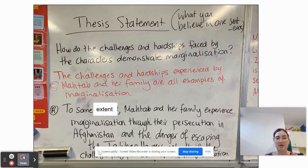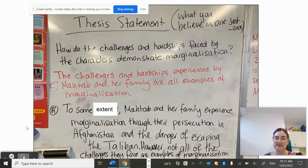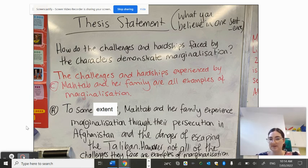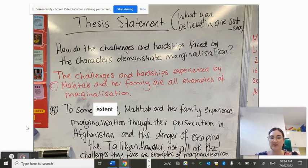If we look at the A-level example, I've given more specific detail and written what's called a contention rather than a thesis. A thesis is a very basic statement, whereas a contention includes more detailed information about what you believe — it's a more advanced version. For example: 'To some extent, Matab and her family experienced marginalization through their persecution in Afghanistan and the danger of escaping the Taliban; however, not all of the challenges they face are examples of marginalization.' I would expect your essay to discuss persecution in Afghanistan and the danger of escaping the Taliban.